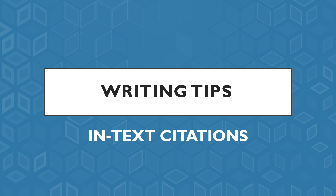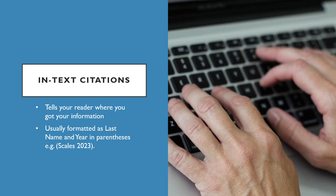This presentation is about in-text citations. We are going to talk about what they are, how to use them, and why you need to use them. An in-text citation tells your reader where you got your information. This is very important and validates the information in your paper. They usually look like this: last name first, and then the year of publication in parentheses. For example, Scales 2023 in parentheses — it's just as simple as that.